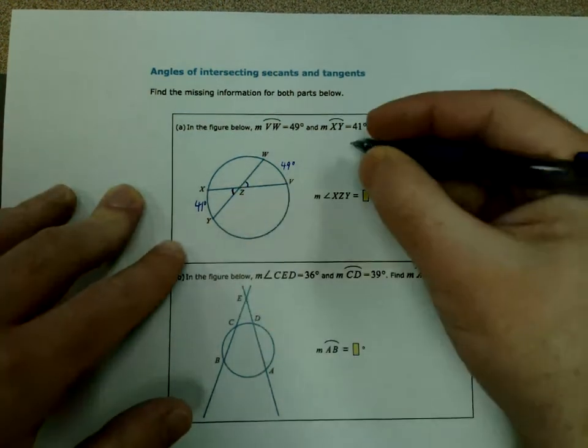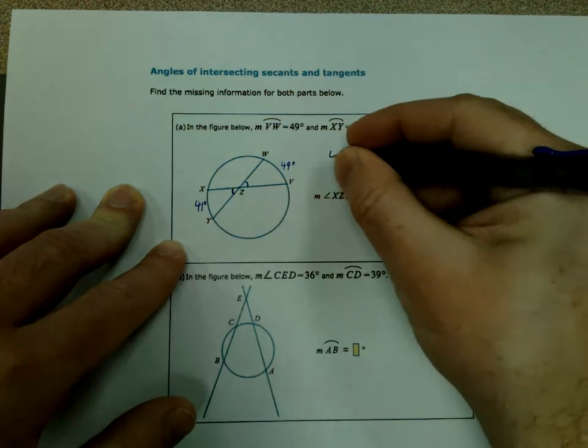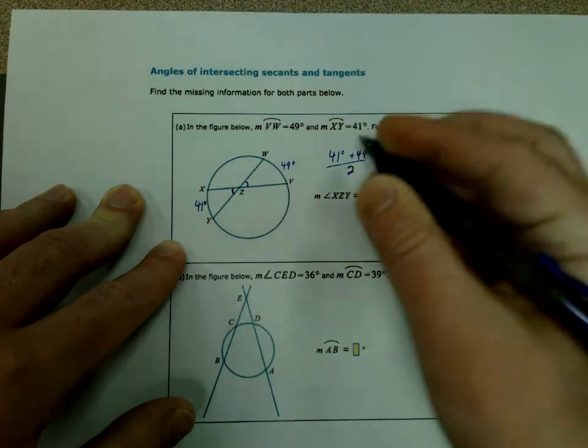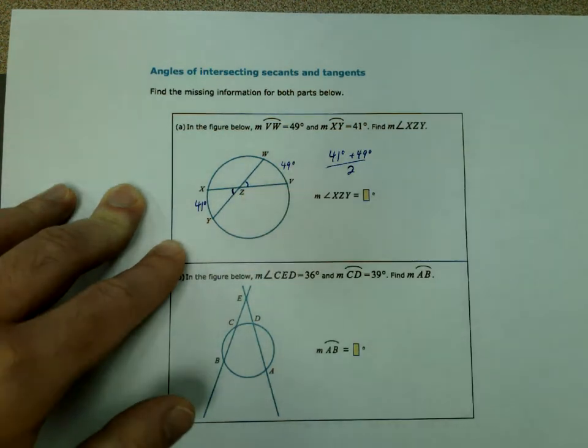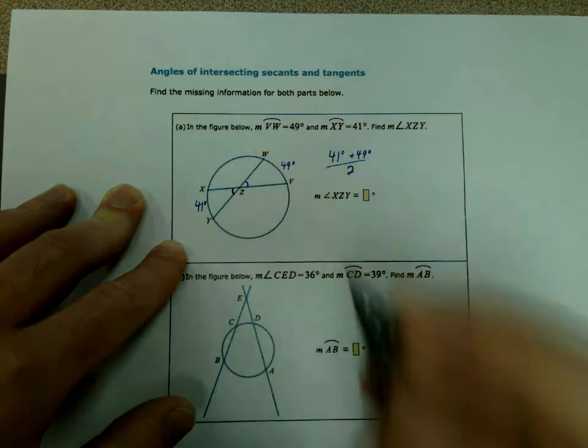So for this, we're going to take our arc measurements here and add them together, and divide by 2. So you're going to add whatever that is inside that point. The point is inside the circle.